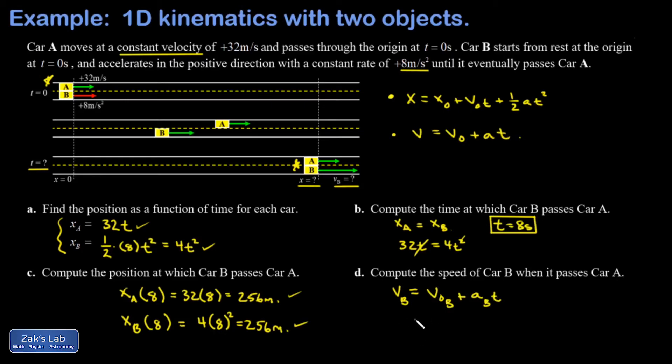I'm interested in its final velocity when t is equal to eight. The initial velocity was zero, the acceleration is eight meters per second squared, the time it was accelerating for is eight seconds, and I get 64 meters per second.